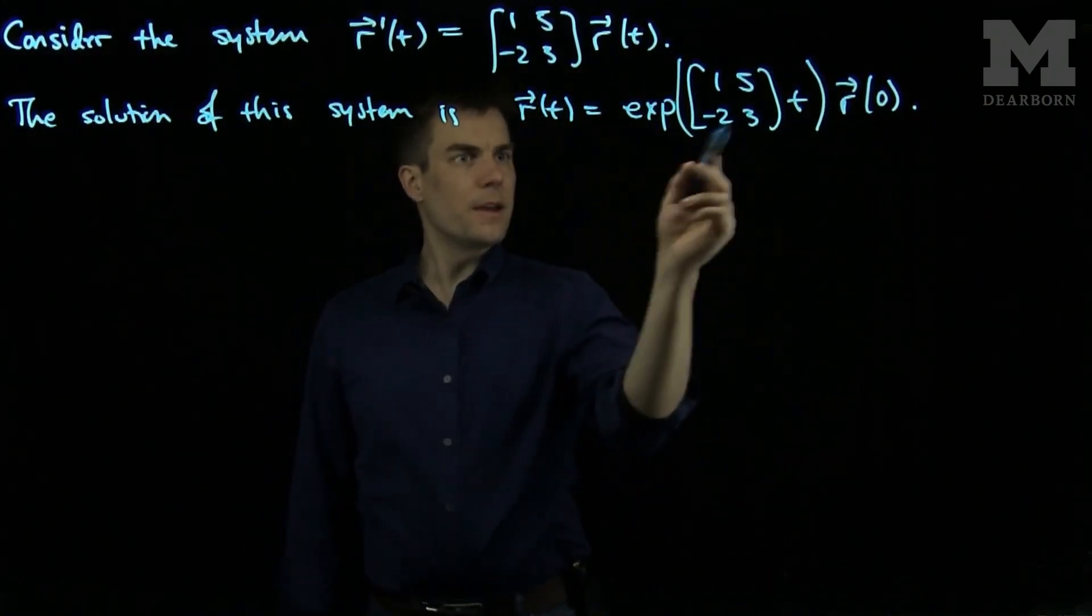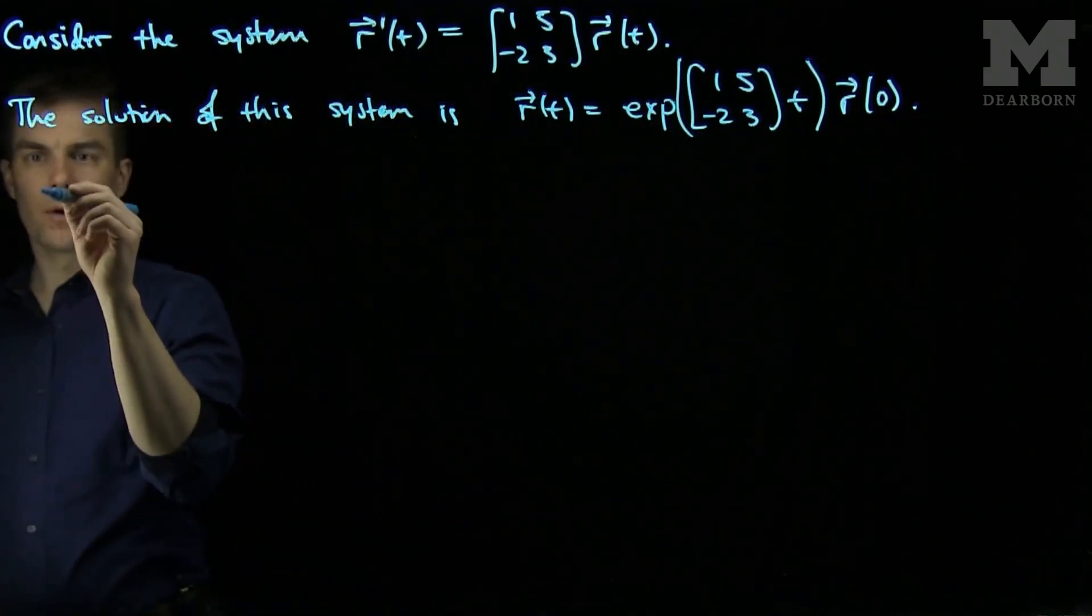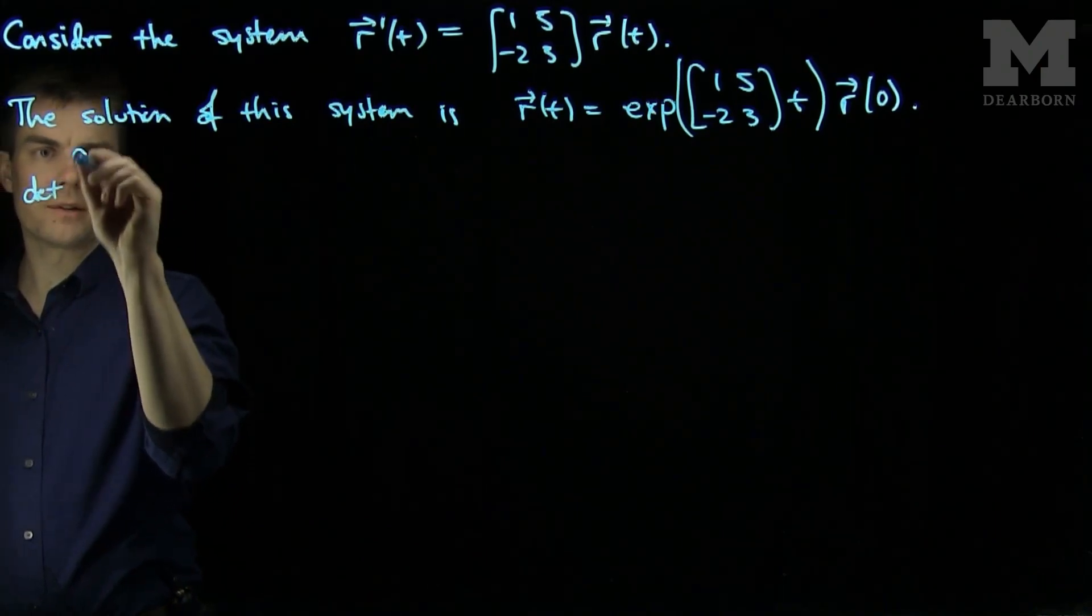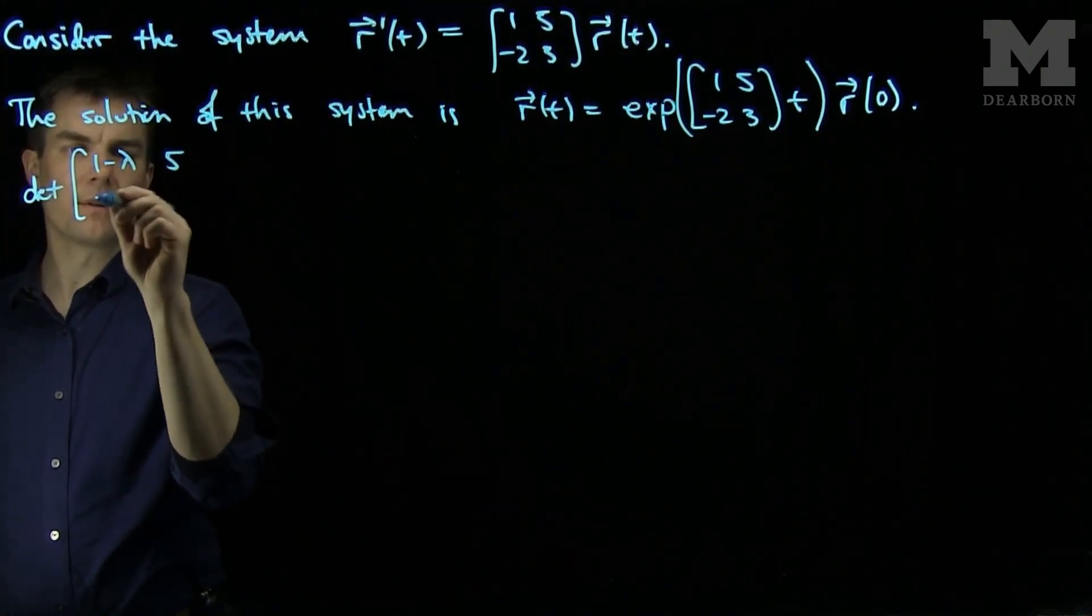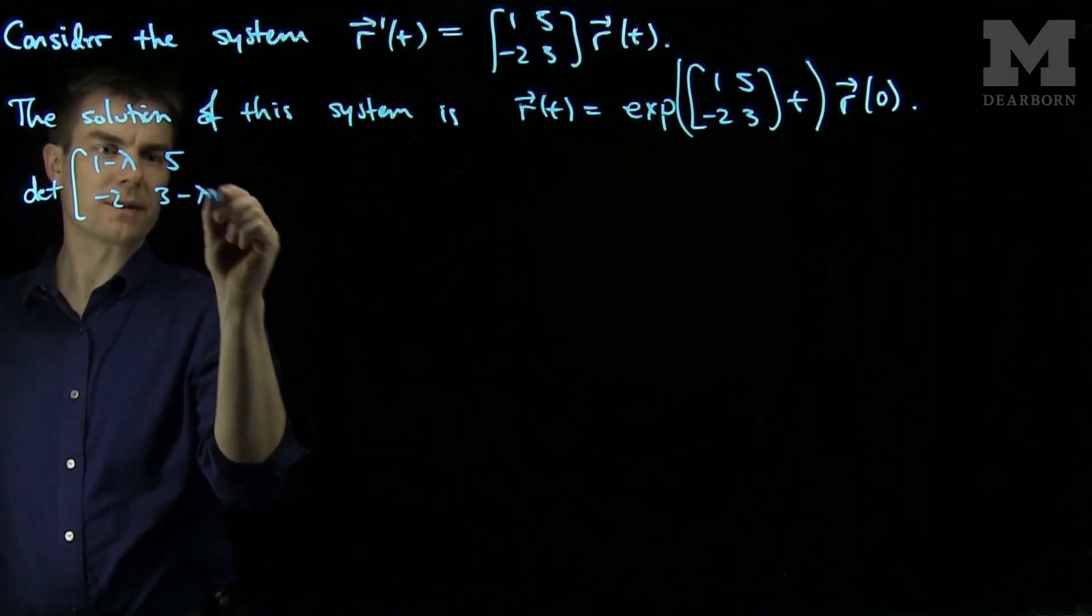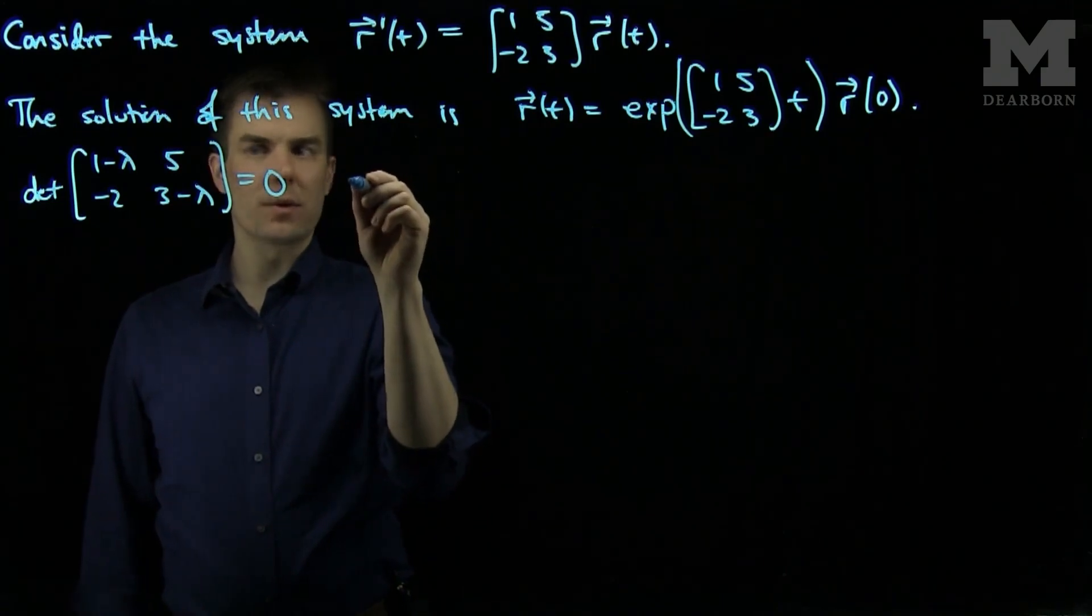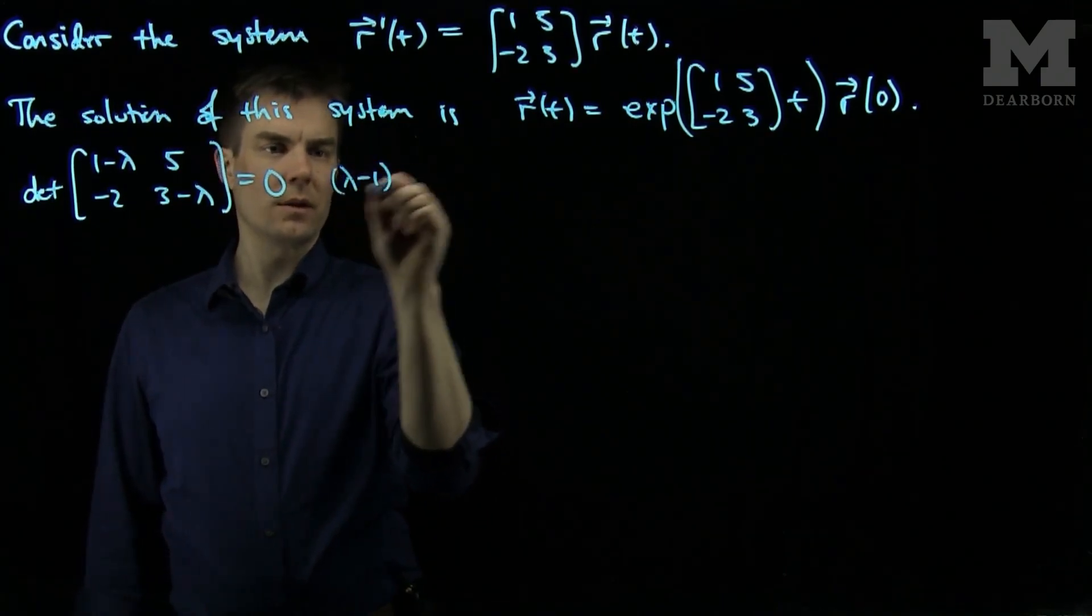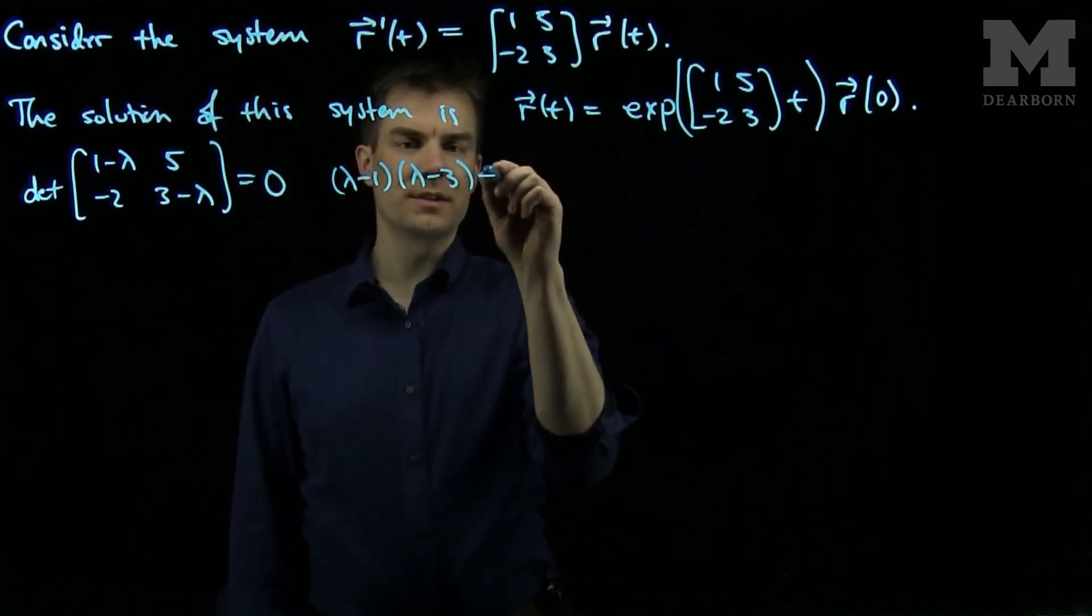To find the exponential of this matrix, we need to find the eigenvalues and eigenvectors of the matrix. We will set the determinant of [[1-λ, 5], [-2, 3-λ]] equals 0. This gives us (λ-1)(λ-3) plus 10 equals 0.